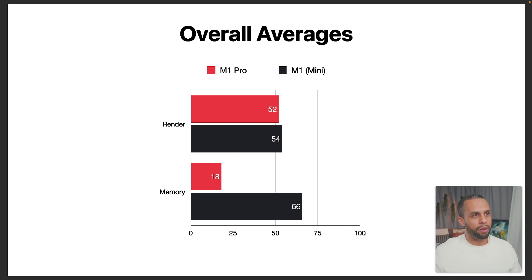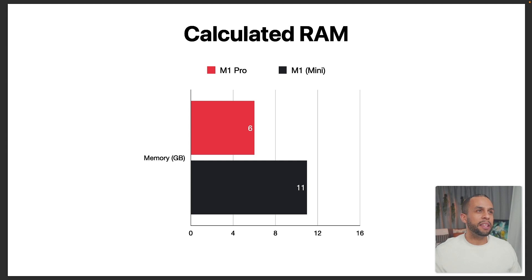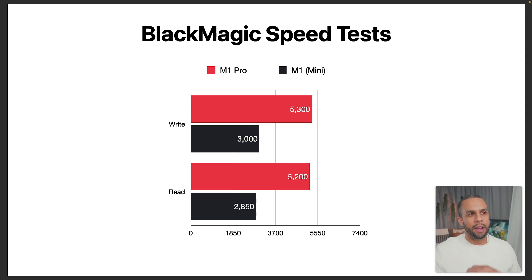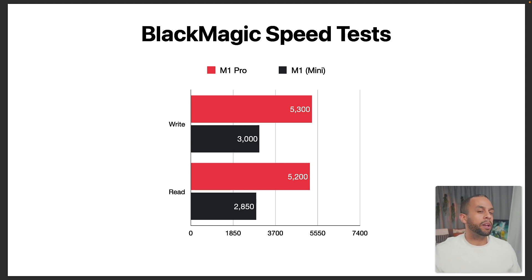Let's take a look at that a little further. If we look at the actual RAM calculated, we'll see that the M1 Pro is only using 6GB of RAM, whereas the M1 is using 11GB of RAM. Something that I started to develop a theory on after looking at this made me think about the speed of the drives themselves — that 1TB drive that we both have. So I went back to the individual and asked them to run a Blackmagic speed test. The M1 Pro is coming in at an average of about 5300 to 5200 between read and write, whereas the M1 was coming up about 3000 to 2800 — a pretty significant difference.